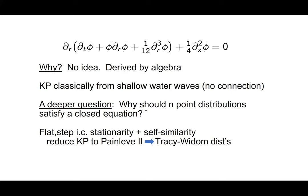Many of you may know that flat initial data gives the Tracy-Widom GOE distribution and step initial data gives the Tracy-Widom GUE distribution. Now these are seen to be just special cases of this KP equation. The flat data is stationary and the step data is stationary after subtraction of a parabola. Looking at the self-similarity from the 1-2-3 rescaling, the KP equation is just reduced to Painlevé A₂, and you immediately get the Tracy-Widom distributions. These are nothing but time-1 special self-similar solutions of KP.